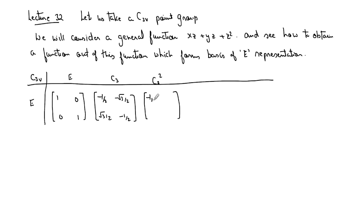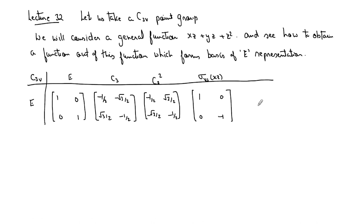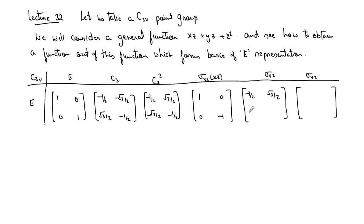For C3², the matrix elements are: minus half becomes plus for some elements and negative for others, with minus half remaining. For σv1 — the xz plane — the matrix is [1, 0; 0, −1]. For σv2, the matrix can be worked out from what we have already learned. I will write it directly — you can verify these yourself.